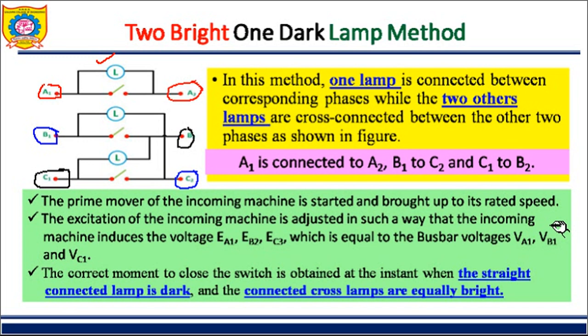The prime mover of the incoming machine is started. When the prime mover starts, the machine is driven because the shaft is driven, and the machine is brought up to rated speed. The excitation of the incoming machine is adjusted so that the induced voltages — phase A, phase B, and phase C — become equal to the bus bar voltages: EA1 equals VA2, EB2 equals VB2, and EC3 equals VC1.